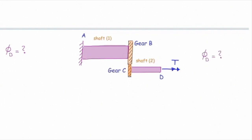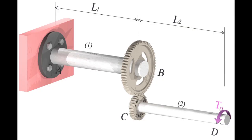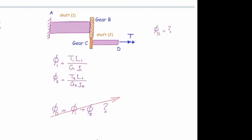And we are looking for phi D. In this case, similar to what we had done before, we need to determine phi 1 and phi 2. So phi 1 is TL over GJ, phi 2 is TL over GJ. But the question is, how we can determine twist at the right end? Can I say phi at D is equal to phi 1 plus phi 2? This is not true anymore. Why? Because the angle of twist in the right element transferred to the bottom element through gears. So I need to take care of that.